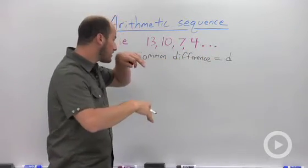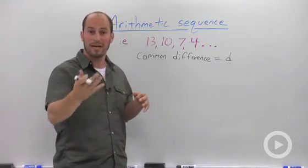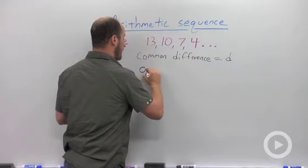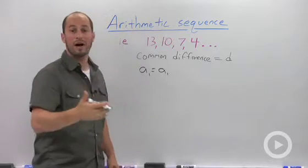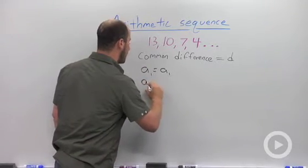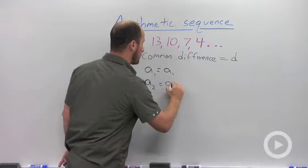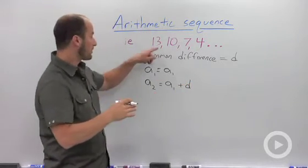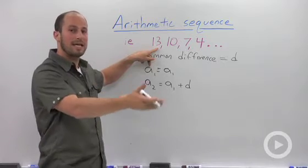What we're going to do is just a general case of figuring out the general term for an arithmetic sequence. If we are given a1, a1 is just going to be our first term, easy enough. To get our second term, all we do is we take our first term and add in that difference. Our first term here was 13. We added in that difference of negative 3 to end up with 10.